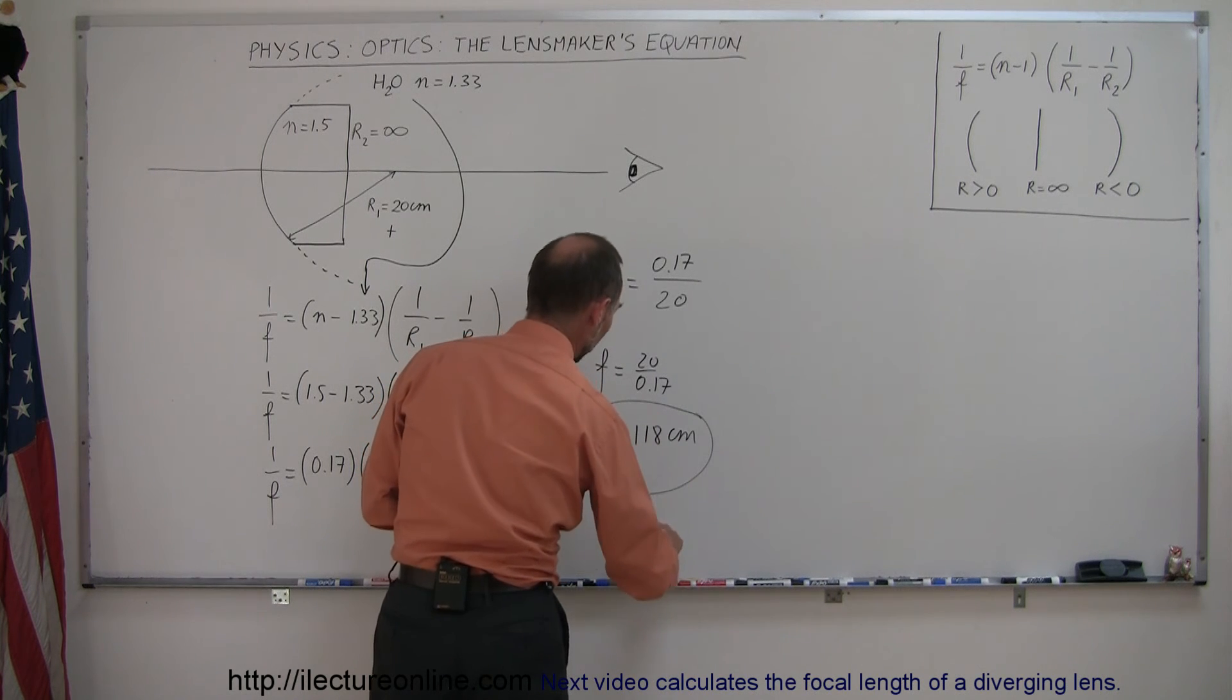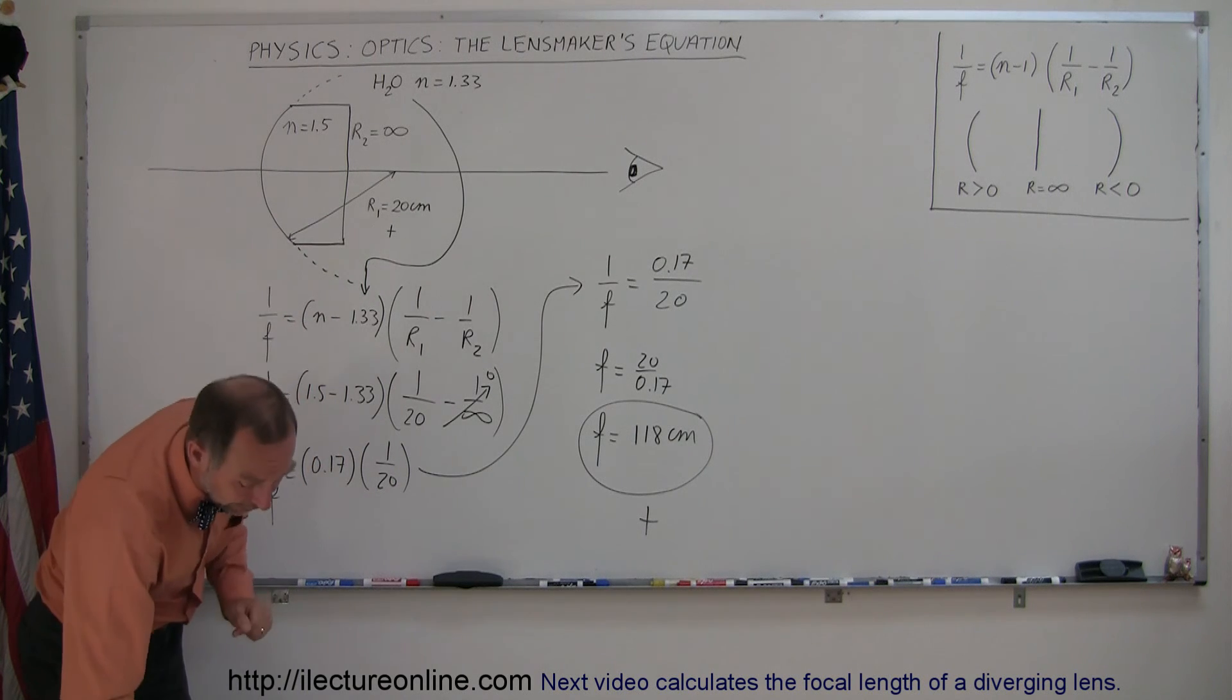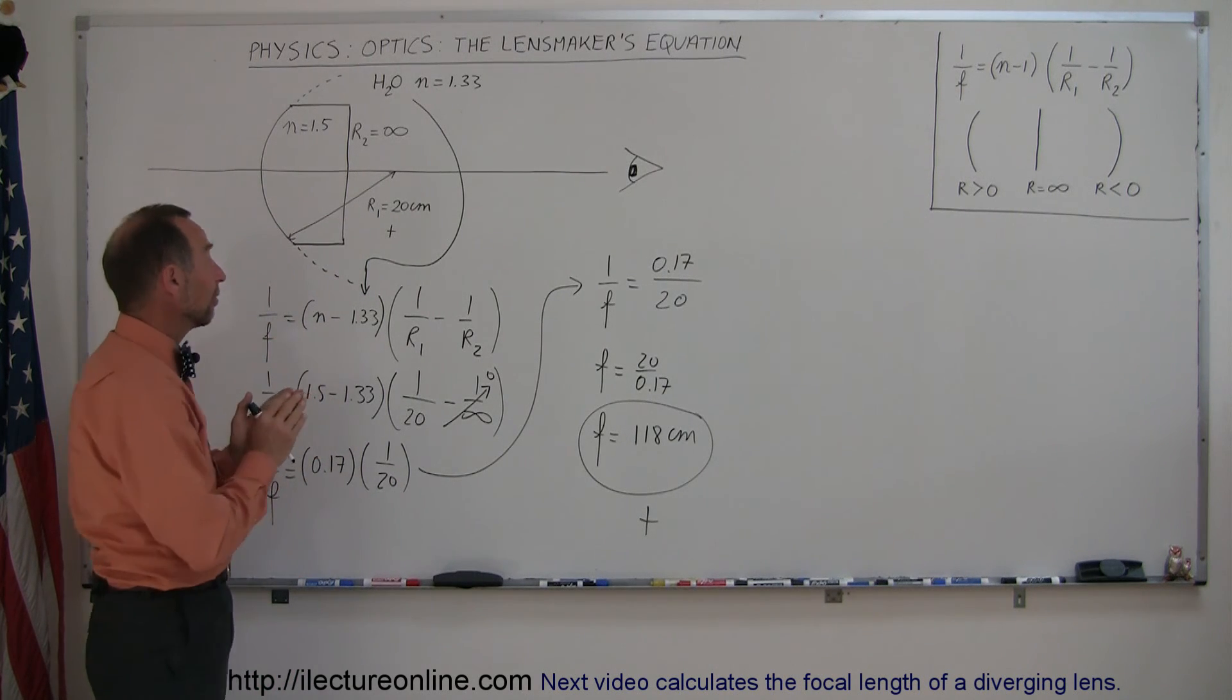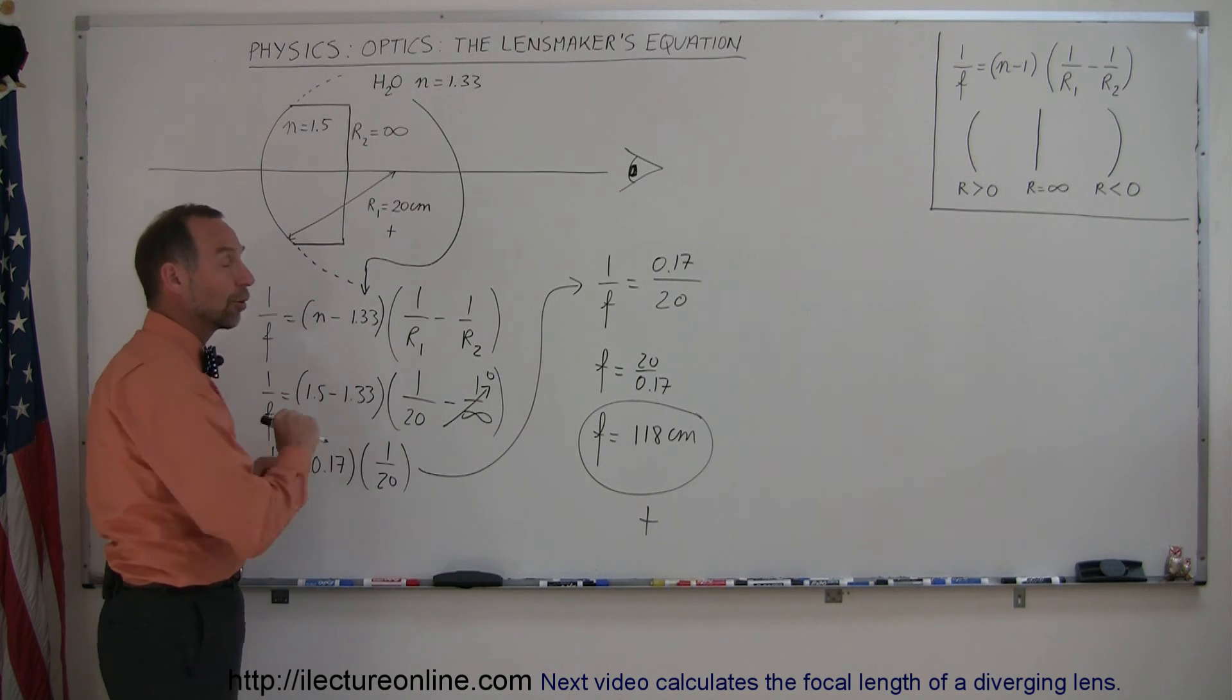Notice it is positive, so it's still a converging lens. Be careful here. This is not the focal length of the lens in air. It is the focal length when the lens is submerged in water.